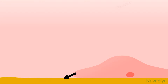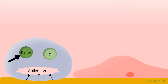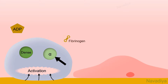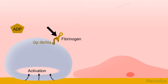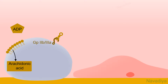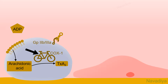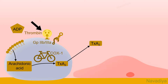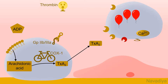After injury, platelets adhere to the damaged area. This is followed by platelet activation and release reaction in which dense granules release ADP and alpha granules release fibrinogen. Fibrinogen binds with membrane receptor glycoprotein 2B3A. From the membrane phospholipid, arachidonic acid is generated. Cyclooxygenase 1 synthesizes thromboxane A2 from it, which is released into the surrounding area. Also on the platelet membrane, thrombin is generated as part of the coagulation cascade and spreads into the surrounding area. Now starts the recruitment of new platelets.